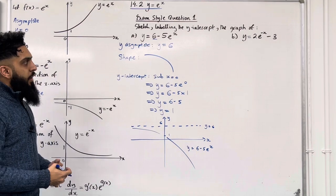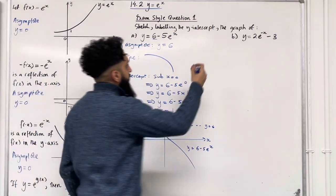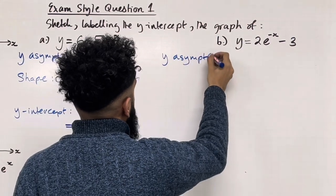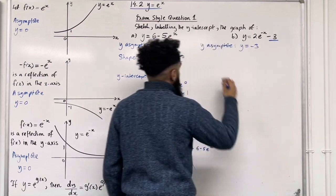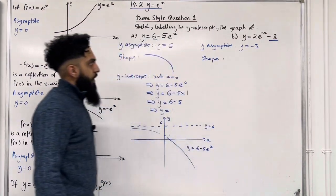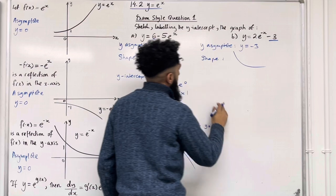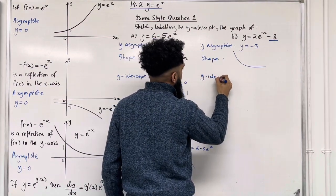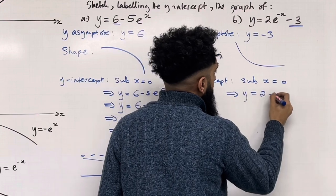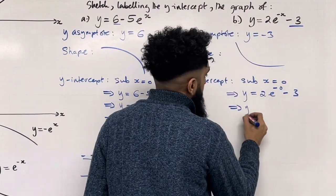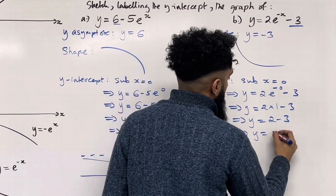Let's have a look at part b. We have the equation y equal 2 e to the power minus x minus 3. The first step is to find the equation of the asymptote. The constant term on the outside is minus 3, so the equation of the asymptote is y equal minus 3. We have e to the power minus x, which takes on this shape. To find the y-intercept, substitute x equal 0: y is equal 2 e to the power minus 0 minus 3, so y is equal 2 minus 3, hence y is equal minus 1.